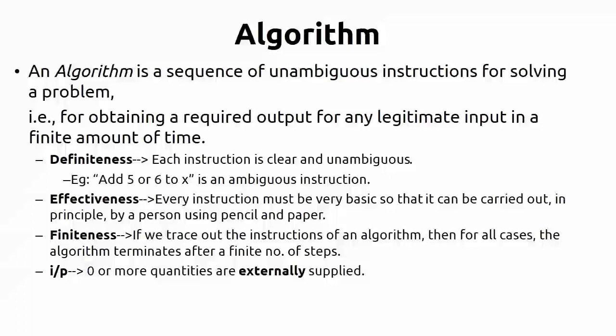The fourth property is input. Input means zero or more quantities are externally supplied. We need to concentrate on this: for a particular algorithm or problem, if you give some input it definitely gives some output. Zero inputs means you are supplying the input internally — for example, writing 'a = 5' inside the program. More inputs means you are supplying them at execution time externally. That is the difference between zero or more quantities externally supplied.